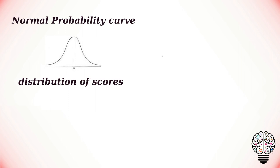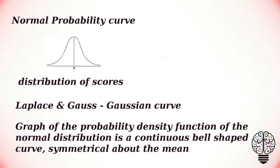Normal probability curve is a bell-shaped curve and a graph representing a distribution of scores. Laplace and Gauss derived the normal probability curve independently, so the curve is also known as Gaussian curve. The graph of the probability density function of the normal distribution is a continuous bell-shaped curve symmetrical above the mean.